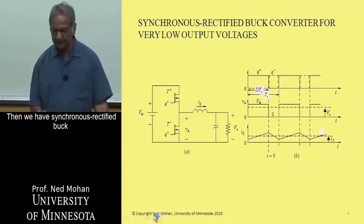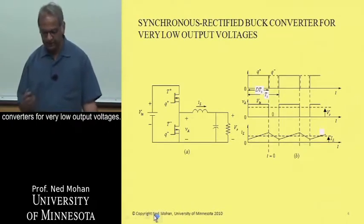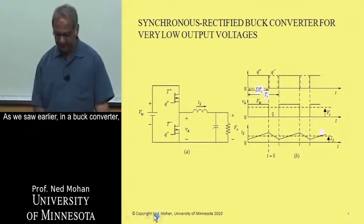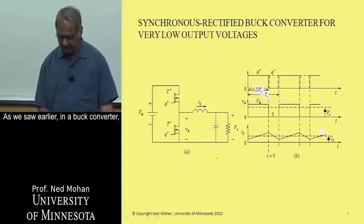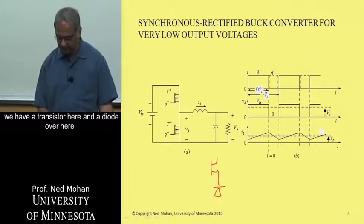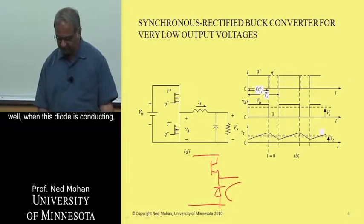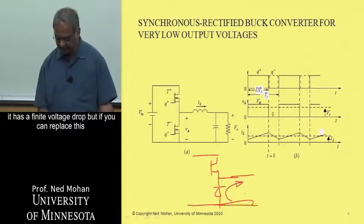Then we have synchronized rectified buck converters for very low output voltages. As we saw earlier, in a buck converter, we have a transistor here and a diode over here. Well, when this diode is conducting, it has a finite voltage drop.